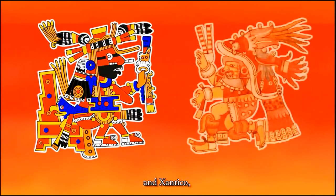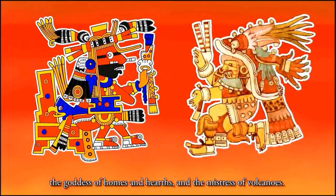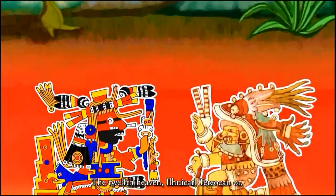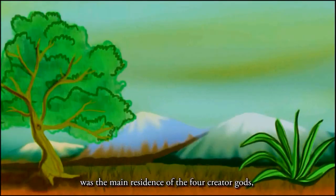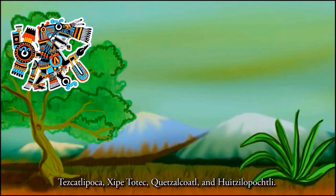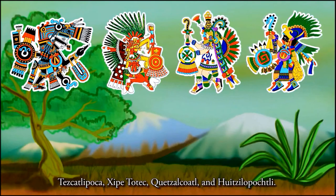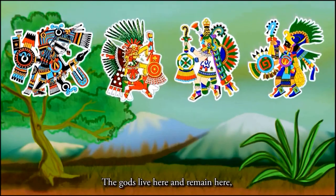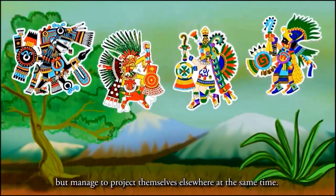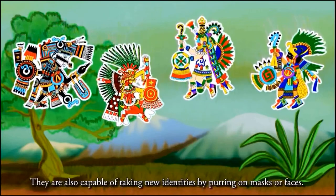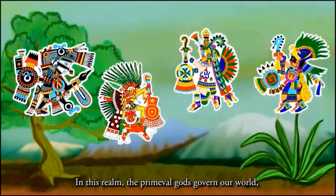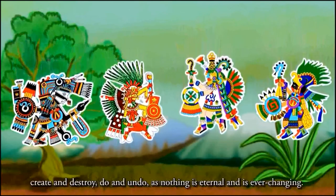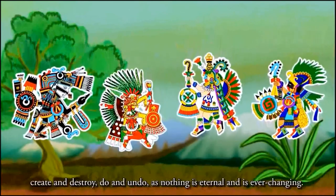The eleventh heaven is the abode of the god of fire, Xiuhtecuhtli, and Chantico, the goddess of homes and herds, and the mistress of volcanoes. The twelfth heaven, Ilwikalt de Teocan, or the place where the gods roam, was the main residence of the four creator gods: Tezcatlipoca, Xipetotec, Quetzalcóatl, and Huitzilopochtli. The gods live and remain here but manage to project themselves elsewhere at the same time, and are capable of taking new identities by putting on masks or faces. In this realm, the primeval gods govern our world — creating and destroying, as nothing is eternal and is ever-changing.